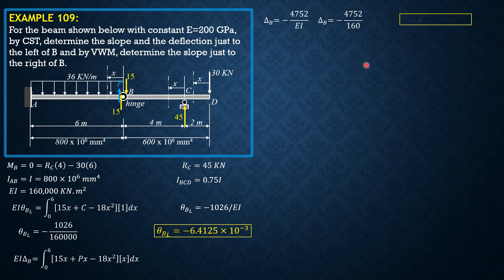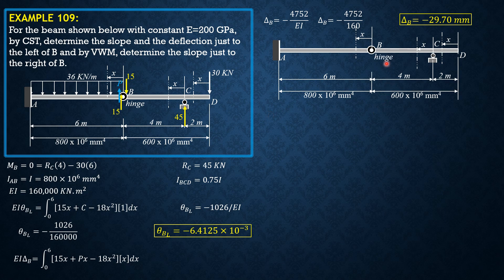For the slope just to the right of B by the virtual work method, we apply a positive slope of 1 just to the right of B, which is counterclockwise as shown. Considering BCD, summation of moments about B equals zero: reaction at C times 4 plus 1 equals zero, so the reaction at C is negative 1 over 4, meaning it is 1/4 downward. By action-reaction, just to the right of B it is 1/4 upward, and just to the left it is 1/4 downward. Using the same sectioning, EI theta_B just to the right is set up accordingly.